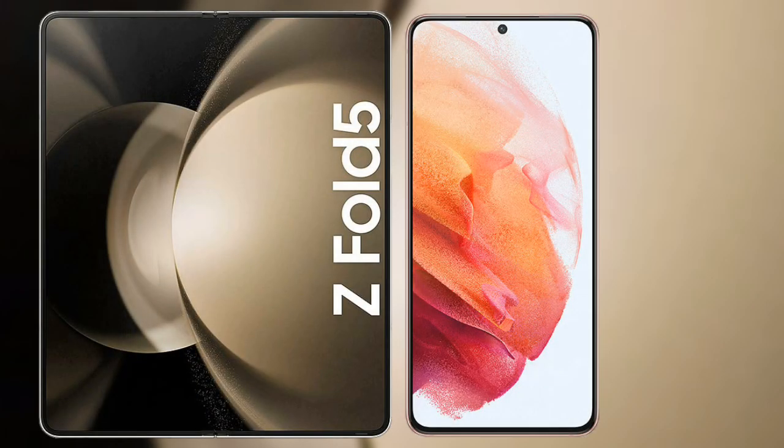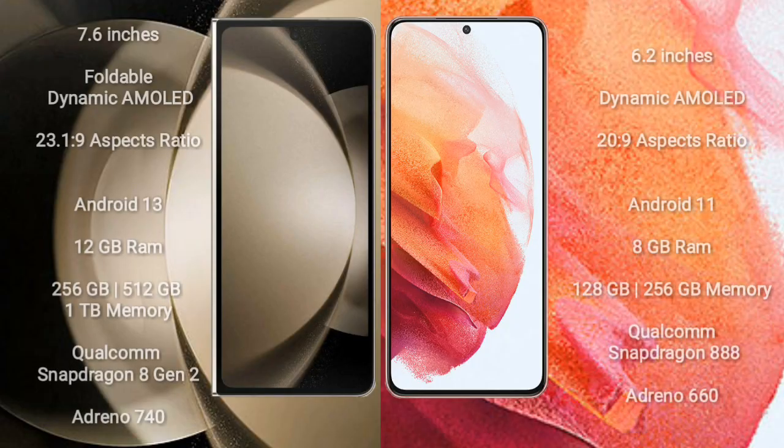I will compare the new Samsung Galaxy Z Fold 5 with Samsung Galaxy S21. The Galaxy Z Fold 5 comes with a 7.6-inch foldable dynamic AMOLED display and aspect ratio 23.1:9. The Galaxy S21 comes with a 6.2-inch dynamic AMOLED display and aspect ratio 20:9.